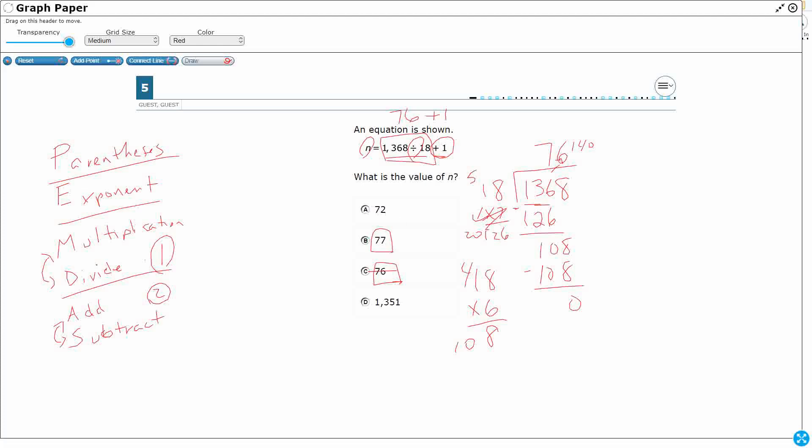Now, we see where the 76 comes from. We see where the 77 comes from. Take a look at this answer, 1351. What if we just didn't see that as a division, saw that as a subtraction? 1368 minus 18, like we misread it. It's going to be 1350, right? And then I add that 1. That's where that 1351 comes from.